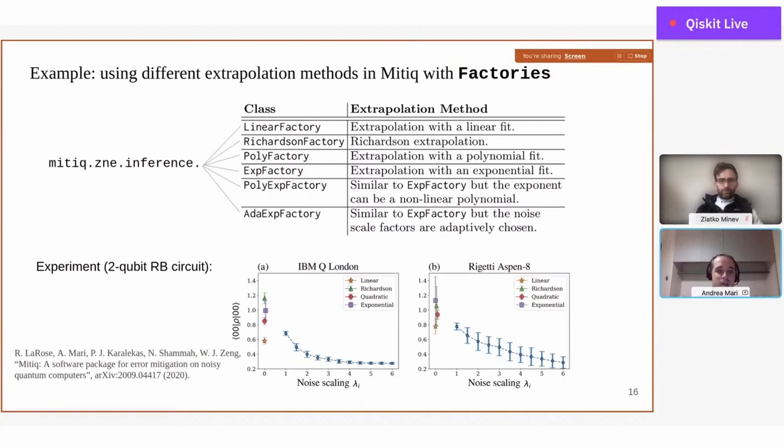All these methods can be encapsulated and defined by individual factory objects. We have a class for this which is the Factory class, and each factory can represent a different extrapolation method. This is the experiment I was speaking about, in which we used a randomized benchmarking circuit executed on IBM hardware and also on Rigetti hardware, in which we scaled the noise using unitary folding and used different inference models to understand which one is better for this kind of device. What we found is that usually the exponential one makes sense, especially if you expect an exponential decay. It's not always the case, so sometimes it's better to use linear extrapolation, polynomial, and so on, as shown in this example here.